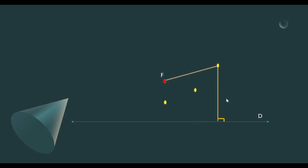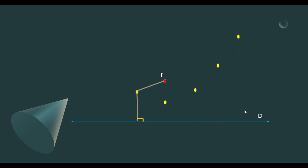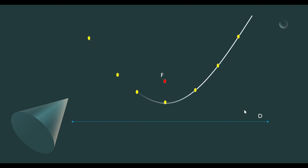Another point. Also notice that as we move the vertical line along this given line, we form a right angle. So let's choose more points. And in tracing all the points, we can now have a parabola.